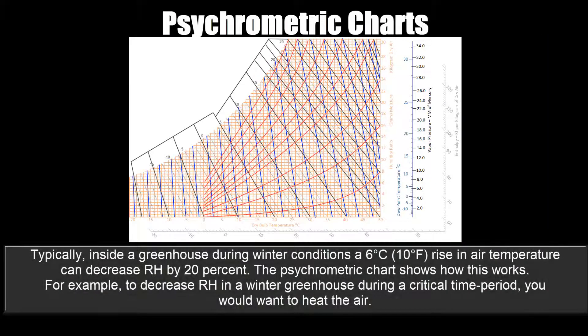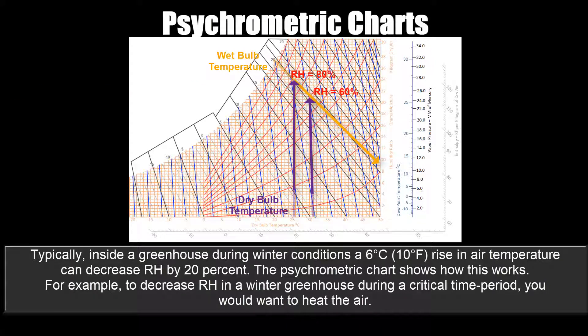Typically, inside a greenhouse during winter conditions, a 6 degree celsius or 10 degree fahrenheit rise in air temperature can decrease RH by 20%. The psychrometric chart shows how this works. For example, to decrease RH in a winter greenhouse during a critical time period, you would want to heat the air.